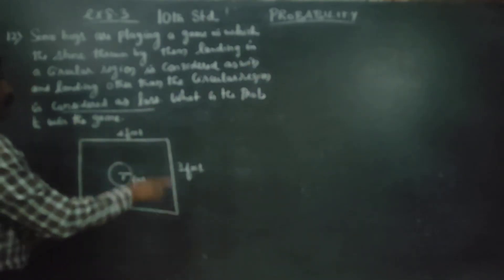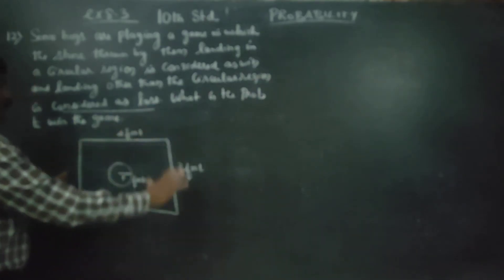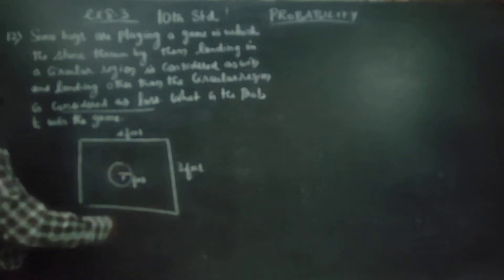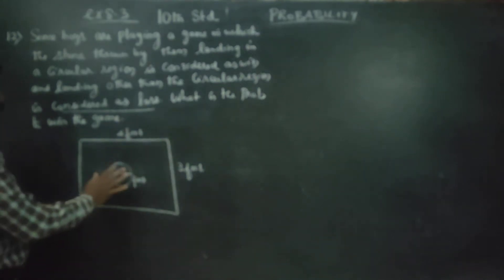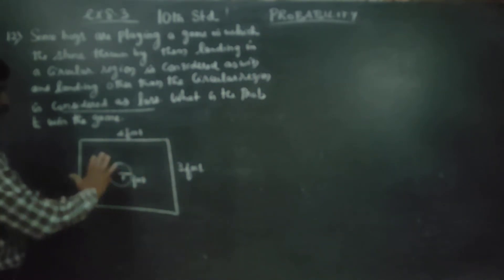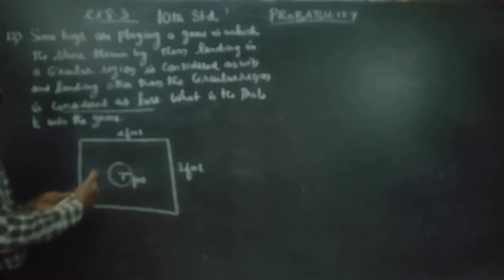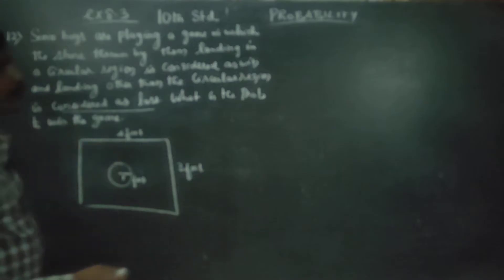They are playing in a rectangular environment. The circle lies on the elongated ground. What is the probability to win the game?